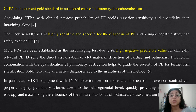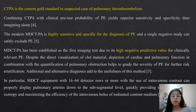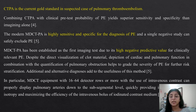CTPA is the current gold standard in suspected cases of pulmonary thromboembolism. Combining CTPA with clinical pre-test probability of pulmonary embolism yields superior sensitivity and specificity than imaging alone. The modern MDCTPA is highly sensitive and specific for the diagnosis of pulmonary embolism, and a single negative study can safely exclude PE. MDCTPA has been established as the first imaging test due to its high negative predictive value. Depiction of cardiac and pulmonary function combined with quantification of pulmonary obstruction helps grade the severity of pulmonary embolism for further risk stratification.